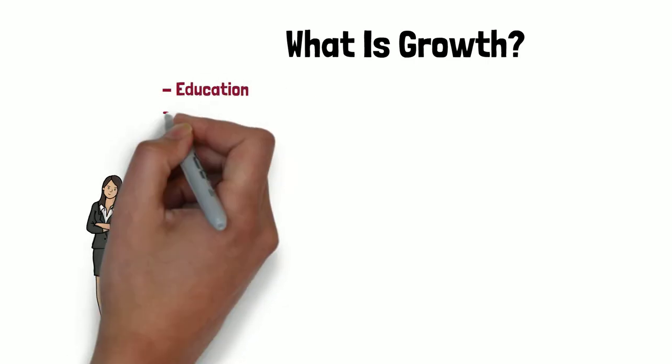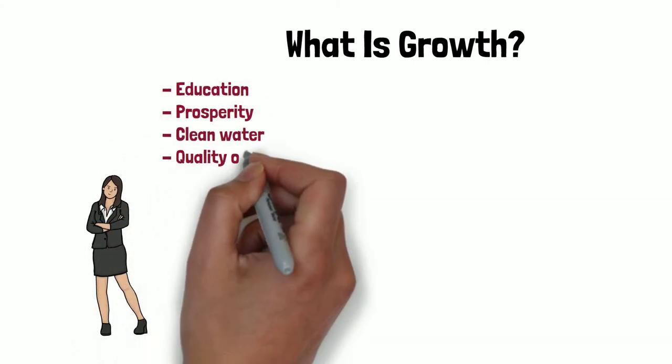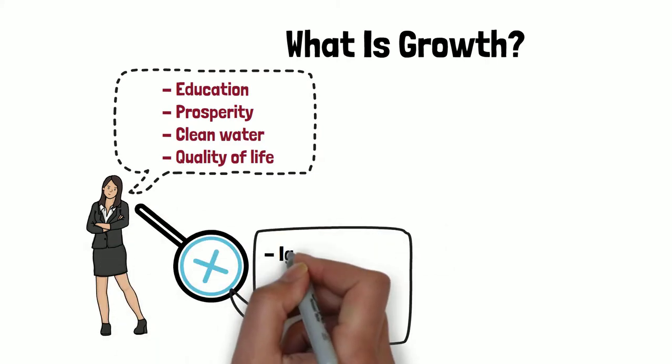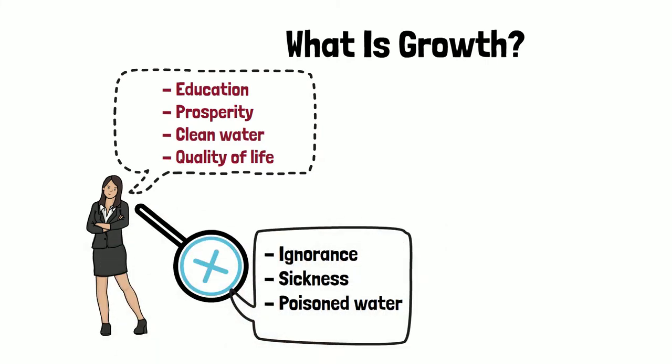For example, we want to grow education, prosperity, clean water, and quality of life, not ignorance, sickness, and poisoned water.